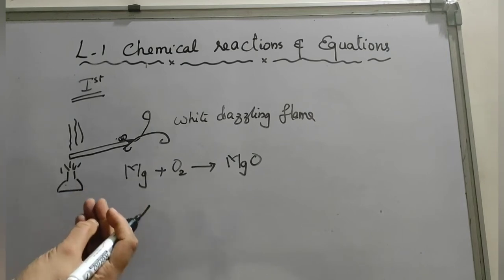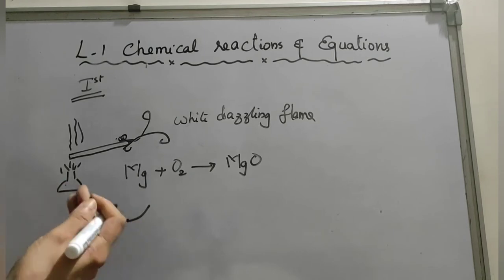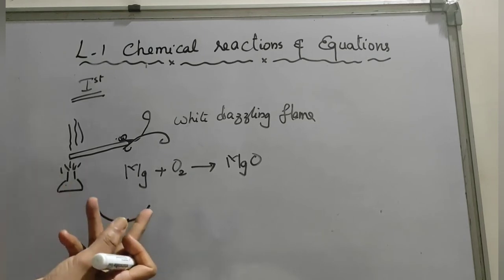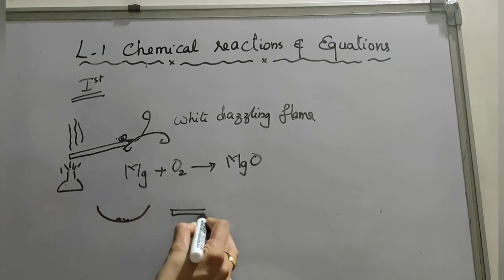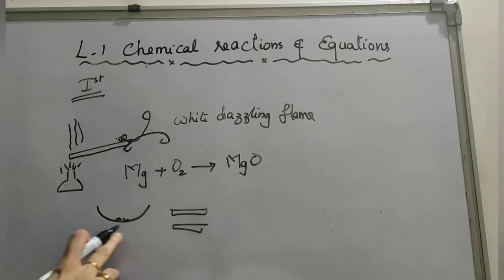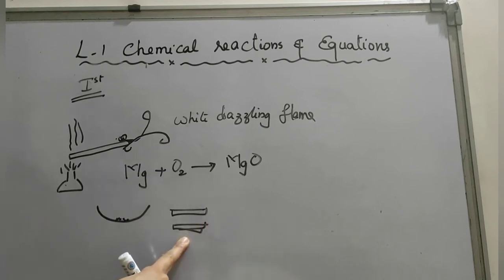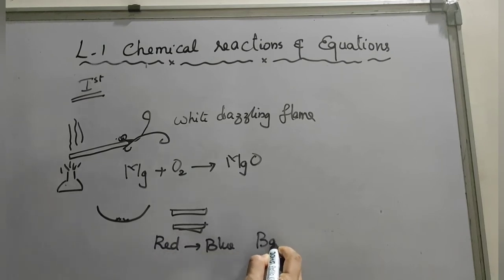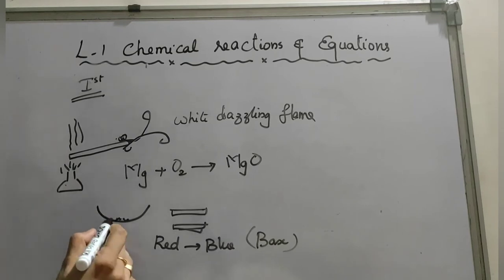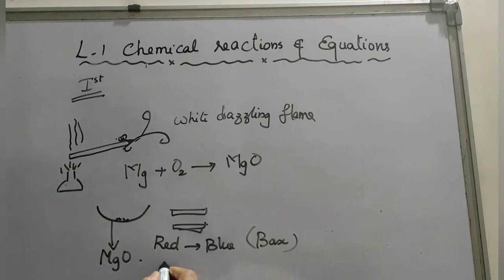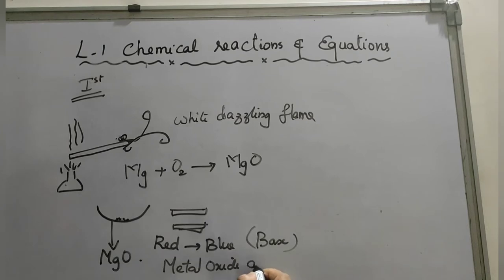Dissolve a small quantity of the ash in water and test it with litmus paper. Dip a red litmus paper in this solution — you will observe that the red litmus paper changes to blue, which means it is a base. From this, we understand that magnesium oxide is basic in nature. Generally, metal oxides are basic in nature.